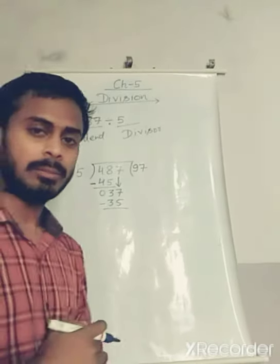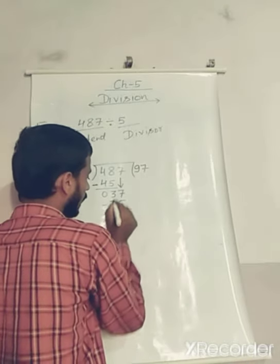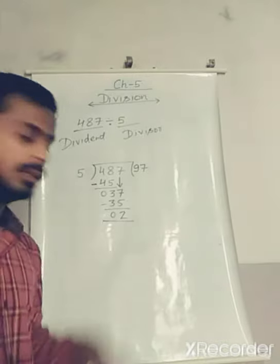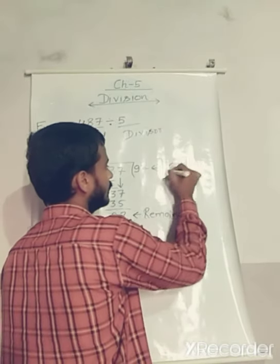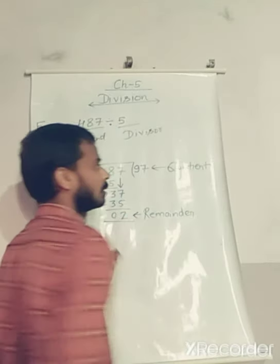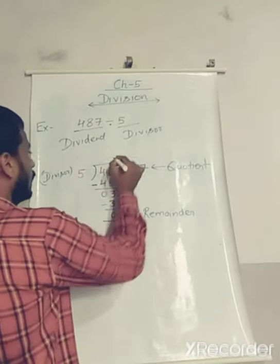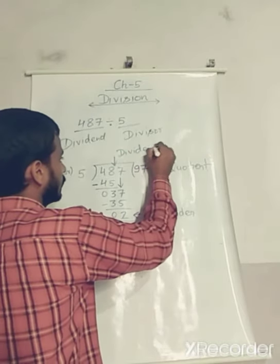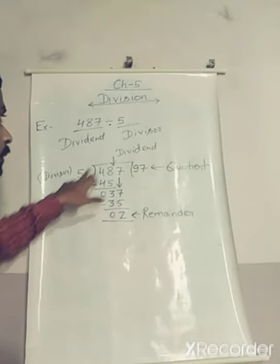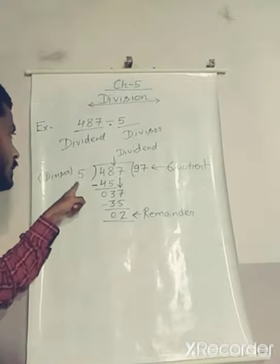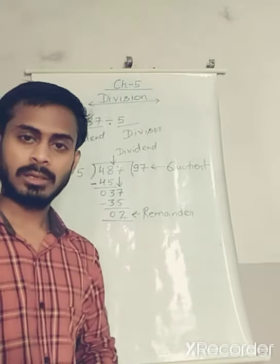7 minus 5 is 2 and 3 minus 3 is 0. This 2 is the remainder and 97 is the quotient. So to summarize: 487 is the dividend — the number which is divided. 5 is the divisor — the number by which we divide. Whatever we get as the result is the quotient, and what is left over is the remainder.